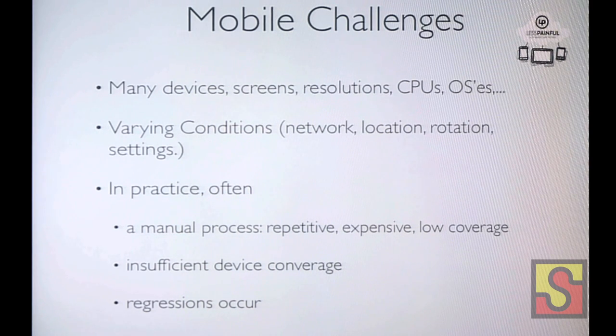All this adds up to how much testing you need to do compared to other platforms. From my experience — I have a background in development — for mobile this is often a manual process. It's repetitive, you have fairly low coverage, it's expensive, and the coverage you have depends on what phones and tablets the developer actually has. So you get insufficient device coverage. Regressions do occur — even if something worked last week, it probably won't work next week because somebody changed something. So I think there's real value in trying to automate this, which is why we're all here.